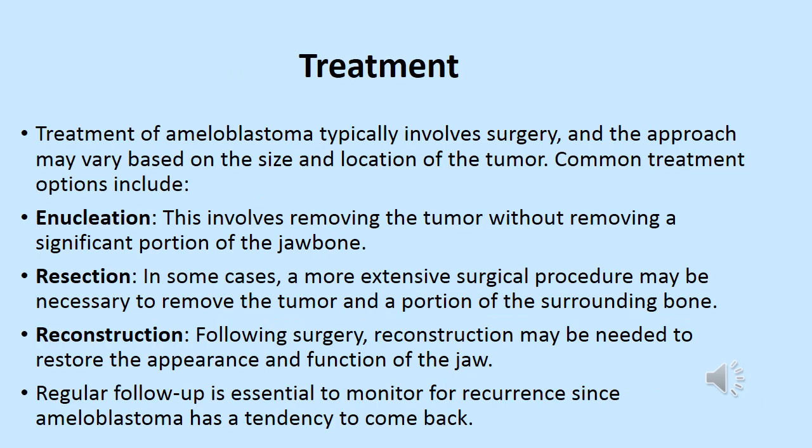Treatment of amyloblastoma typically involves surgery, and the approach may vary based on the size and location of the tumor. Common treatment options include enucleation, which involves removing the tumor without removing a significant portion of the jaw bone. Resection may be necessary in some cases — a more extensive surgical procedure to remove the tumor along with a portion of the surrounding bone. Following surgery, reconstruction may be needed to restore the appearance and function of the jaw.